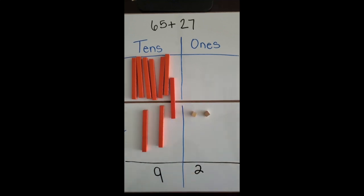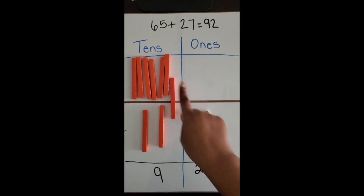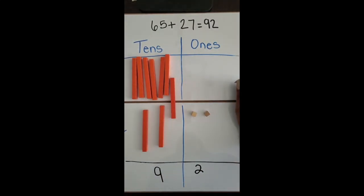So our sum is 92. 65 plus 27 equals 92. We just used base 10 blocks to add two two-digit numbers.